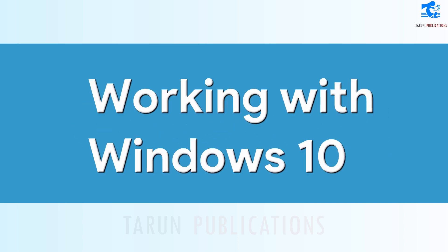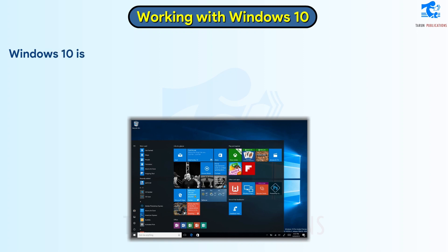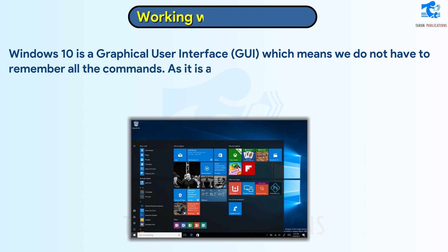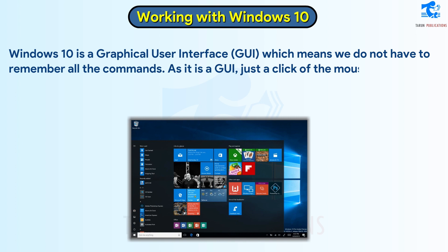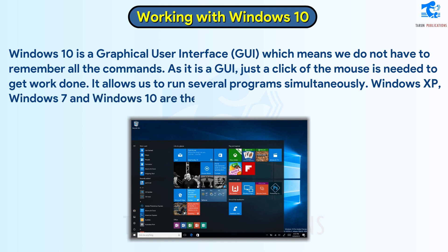Chapter 2: Working with Windows 10. Windows 10 is a graphical user interface, or GUI, which means we do not have to remember all the commands. As it is a GUI, just a click of the mouse is needed to get work done. It allows us to run several programs simultaneously. Windows XP, Windows 7, and Windows 10 are the most popular versions of Windows.